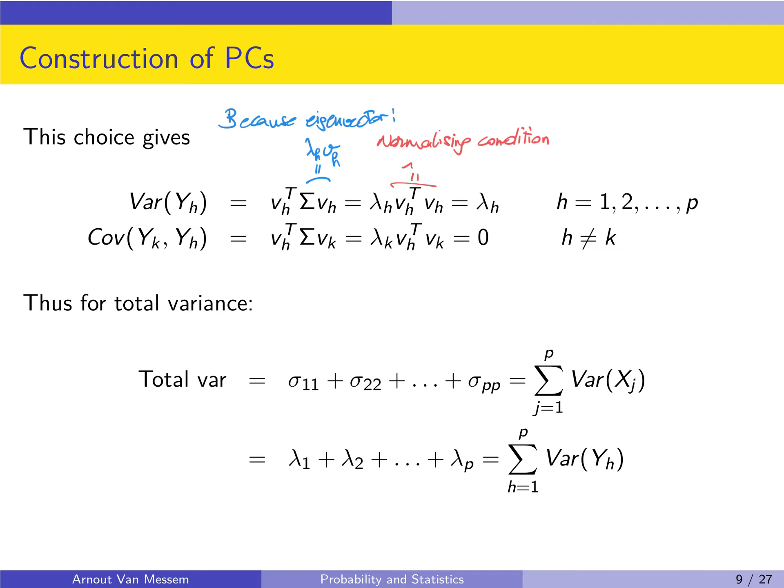So the covariance is zero as it should be — the principal components are uncorrelated and orthogonal. Furthermore, the variance of yh is always equal to lambda h, so it equals the eigenvalue. Since we already performed the eigenvalue-eigenvector decomposition, we know these values and do not need to calculate the variances again.